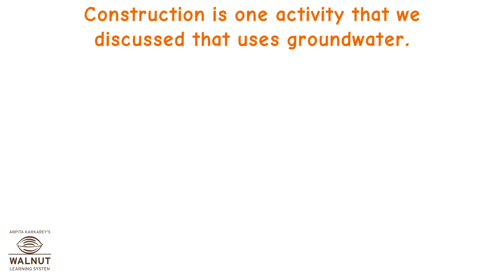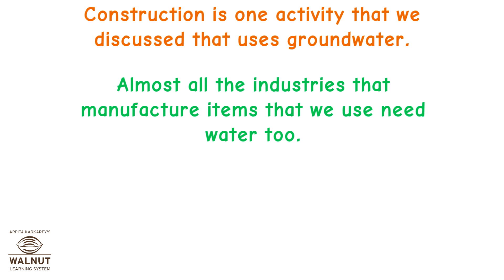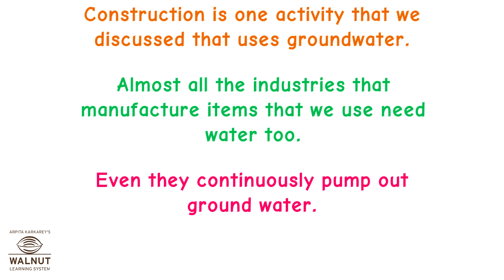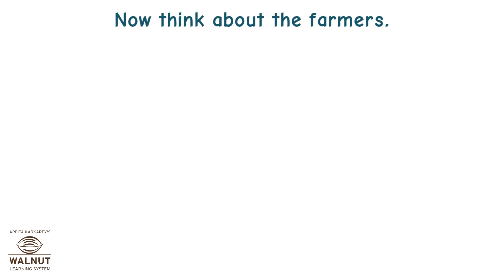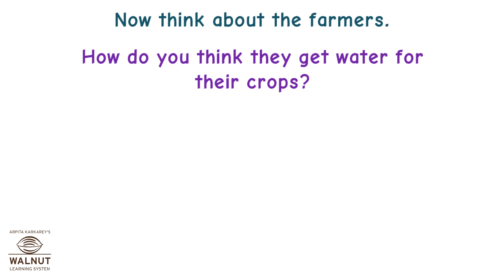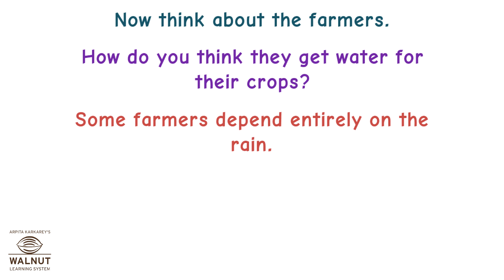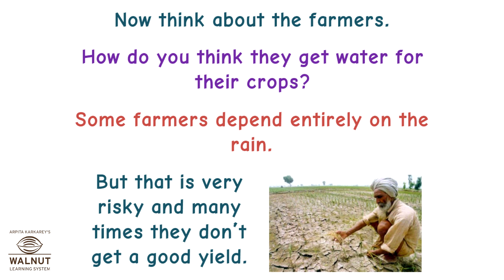Construction is one activity that uses groundwater. Almost all the industries that manufacture items that we use need water too, and they continuously pump out groundwater. Now think about the farmers — how do you think they get water for their crops? Some farmers depend entirely on the rain, but that is very risky and many times they don't get a good yield.